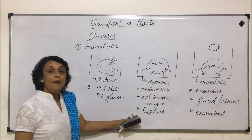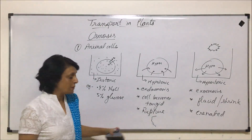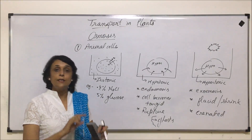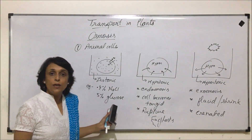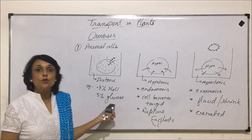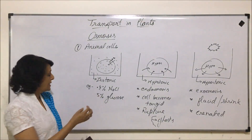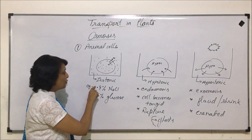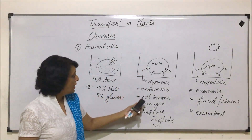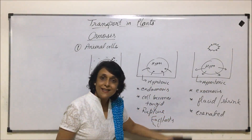When the animal cell ruptures, the plasma membrane will rupture and all the content will come out. These broken pieces of plasma membrane are called ghosts. But this is visible only in case of animal cells because there is no protective cell wall outside these. So in isotonic condition there is no net movement; in hypotonic condition endo-osmosis takes place, it becomes turgid and ultimately ruptures; in hypertonic condition exo-osmosis takes place, water comes out, it becomes flaccid and gets crenated.